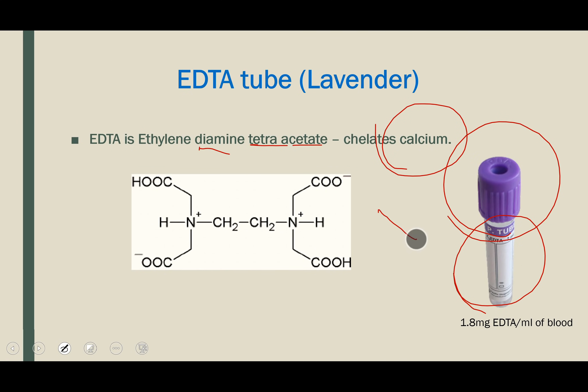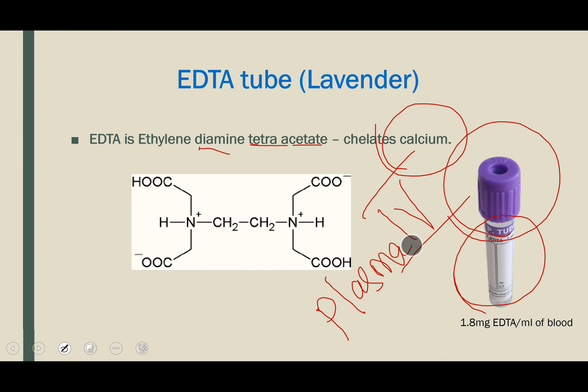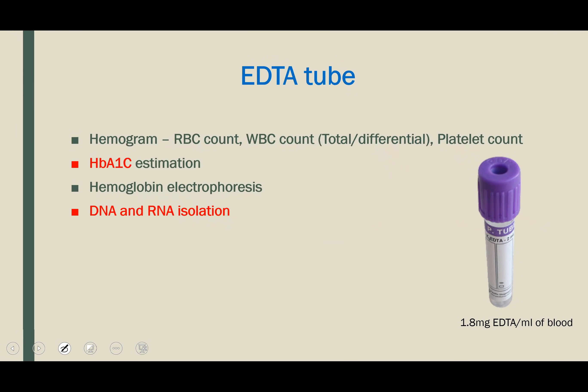EDTA is a strong chelator of calcium, which is clotting factor 4. So when you take blood in the EDTA vial and centrifuge, you will get plasma — because we have prevented clotting, clotting factors are not consumed. The EDTA tube is used in investigations where we don't want clotting and want to preserve the morphology of blood cells.